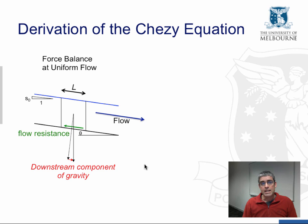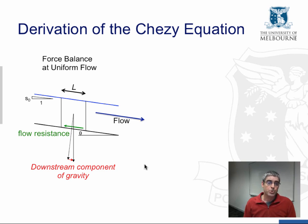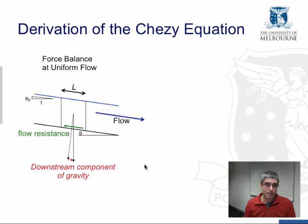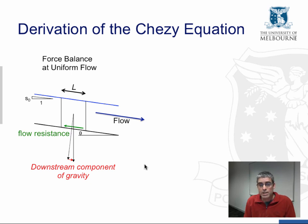The Chezy equation is based on the force balance at uniform flow. At uniform flow, there's no deceleration or acceleration, so the force applied by flow resistance on the water body at the channel boundary is exactly equal and opposite to the force applied by the downstream component of gravity. We're going to express this force balance in mathematical terms and use it to derive the Chezy equation.